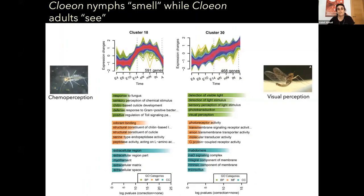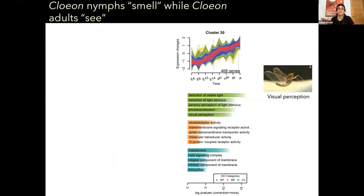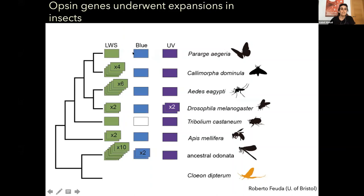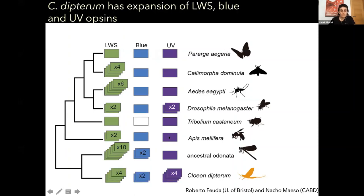What about adults and vision? In insects, there are three main light-sensing molecules: long-wave sensitive opsins, blue-sensitive opsins, and UV-sensitive opsins. These gene families have undergone different expansions or reductions independently in different lineages. In Cleon dipterum, we observe an expansion of the long-wave sensitive opsin, but also duplication of the blue-sensitive opsin and — most importantly — the UV-sensitive opsin, with four copies. This is the largest expansion described in insects so far.